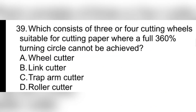Question 39. Which consists of 3 or 4 cutting wheels suitable for cutting paper where a full 360-degree turning circle cannot be achieved? A. Wheel cutter. B. Length cutter. C. Trap arm cutter. D. Roller cutter. Correct answer: A. Wheel cutter.